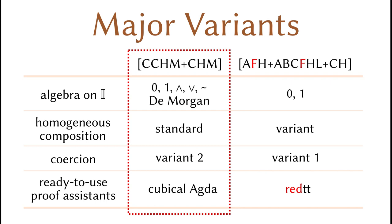The second major variant has a much simpler algebra on the interval. We only have 0, 1, dimension variables, and nothing else. However, it supports flexible composition and coercion directions. Both variants have univalence, higher inductive types, and all the features you want. It is unclear which one is better.